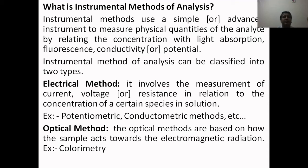The second category is optical methods of analysis. Optical methods are basically based on how the sample interacts with electromagnetic radiation whenever it falls on the sample containing certain species under investigation. Examples are colorimetry, atomic absorption spectroscopy, and flame photometry, among several others.